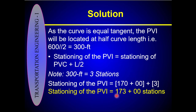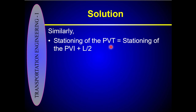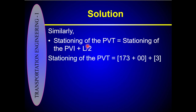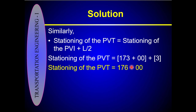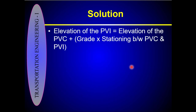Similarly, the stationing of the PVT equals the stationing of the PVI plus the right-side half of the curve. The stationing of the PVI is 173, and L/2 is 300 feet, written as 3 stations. Therefore, the stationing of the PVT is 173 + 3 = station 176.